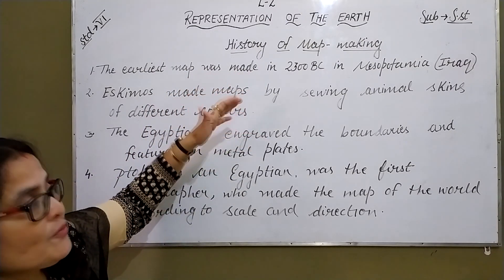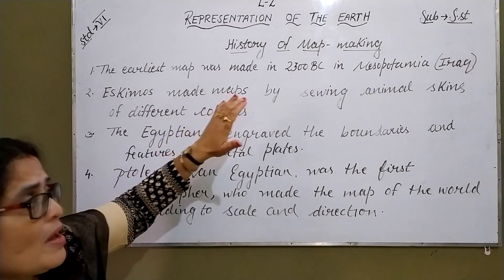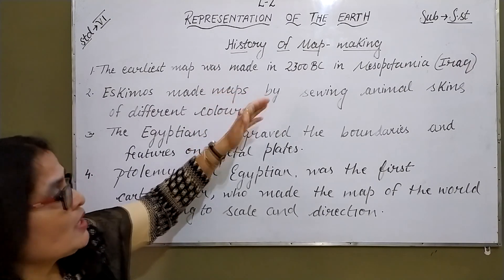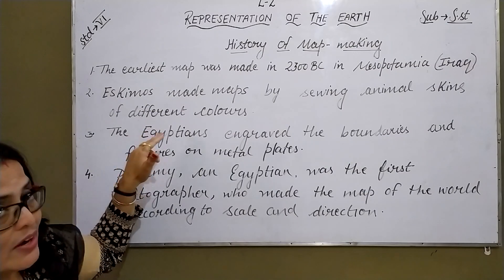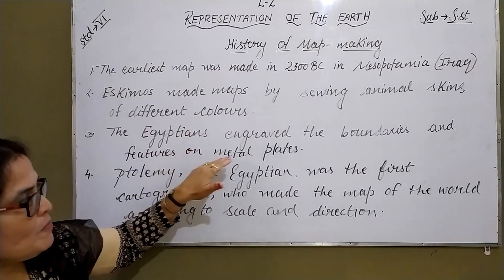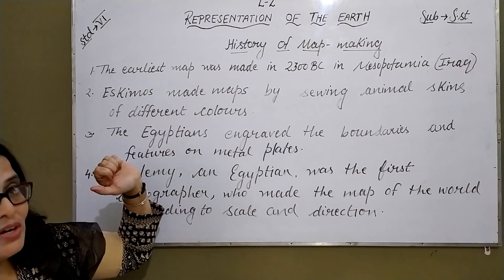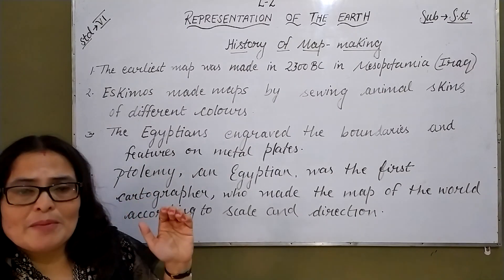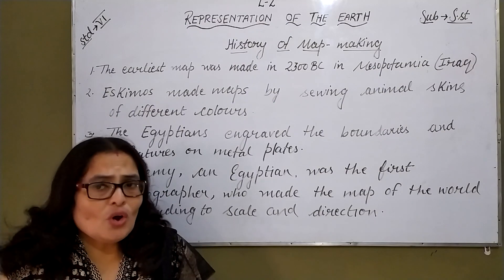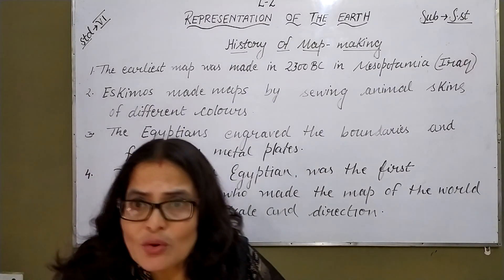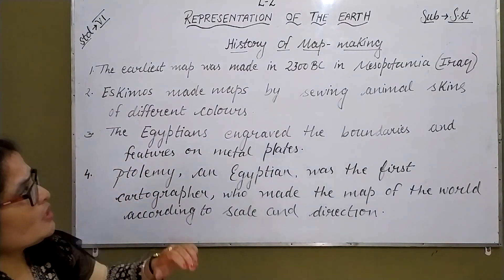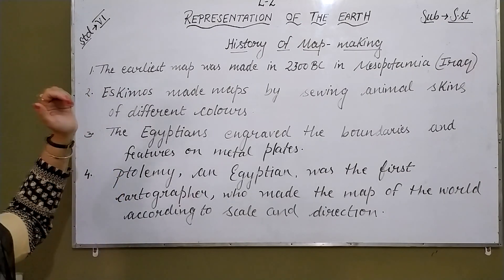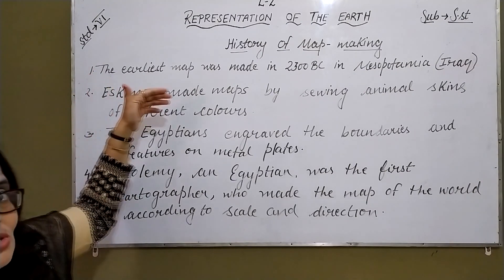Eskimos made maps by sewing animal skins and using different colors, but this map was also not successful because it only showed the boundary of the land. Then the Egyptians engraved the boundaries and features on metal plates. These three maps — made in Mesopotamia, by Eskimos, and by Egyptians — are memory-based. They were not drawn according to scale; they could be called sketches.